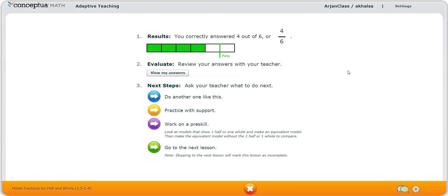The student has answered four out of six correctly, which is not enough to pass. As a result, they see this adaptive teaching screen. They're asked to review their answers with their teacher and ask their teacher what to do next.